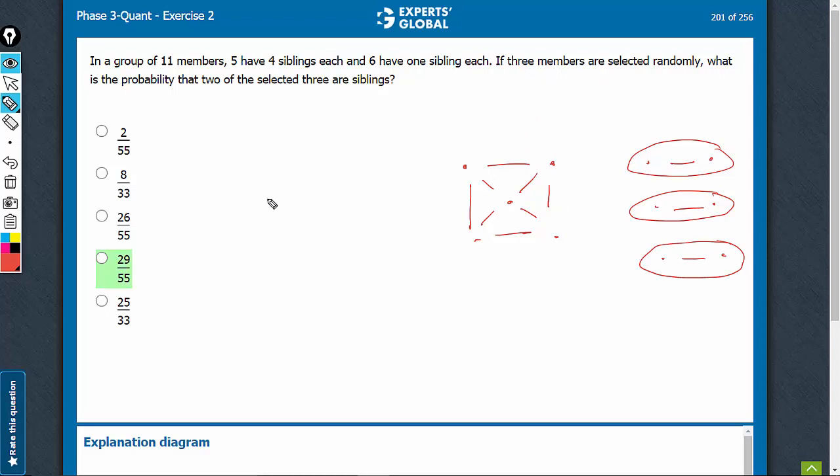If 3 members are chosen, out of 11, 3 are being chosen. Denominator will be 11C3. Probability that 2 of the selected 3 are siblings. Exactly 2.